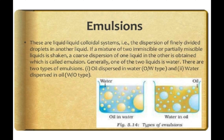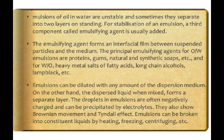Next is emulsion — a liquid-liquid colloidal system, that is finely divided droplets dispersed in another liquid, for example oil in water or water in oil. When a mixture of two immiscible or partially immiscible liquids is shaken, a coarse dispersion of one liquid in the other is obtained — that is what we call an emulsion. There are two types: oil dispersed in water (O/W type) and water dispersed in oil (W/O type). Emulsions of oil in water are unstable.